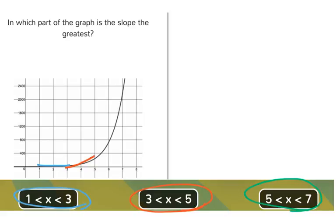And then between 5 and 7, it's increasing a lot. So the slope increased a lot more.